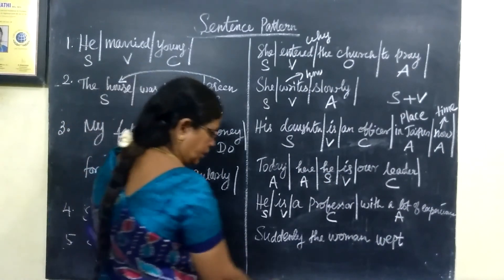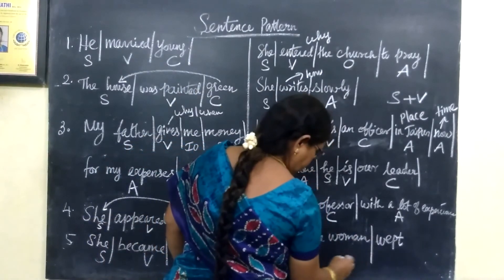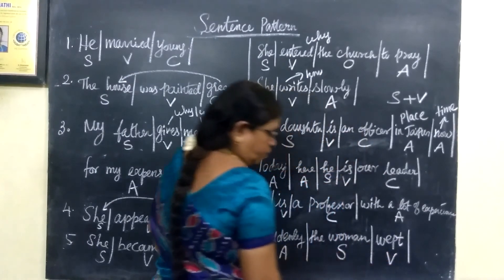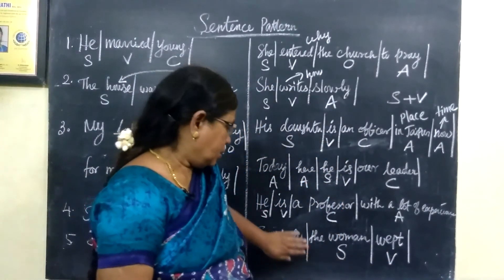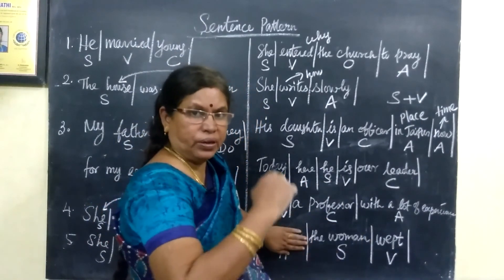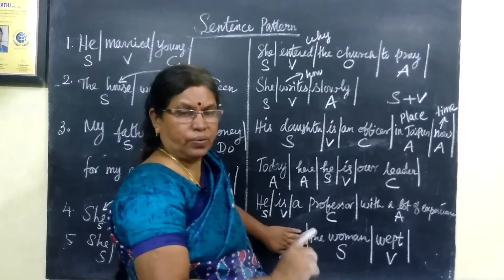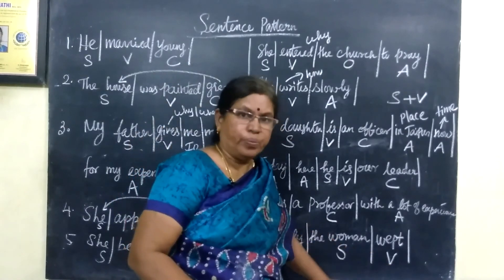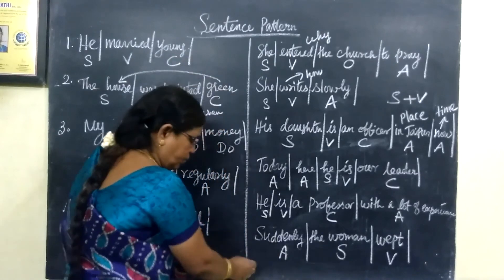Next example: 'A woman webbed' — 'the woman' is the subject, 'webbed' is the verb. That forms a complete sentence. It can form a sentence this way. Thank you.